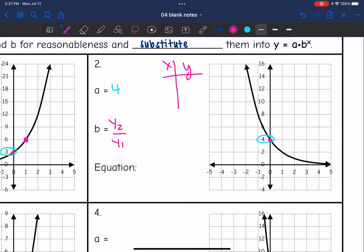And I can either use this point right below it or this point right above it. I'm just going to use this one right here, (1, 2). So I have the point (0, 4) and the point (1, 2).